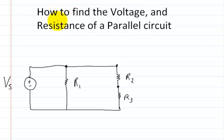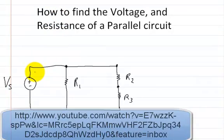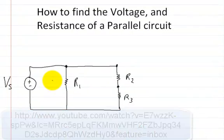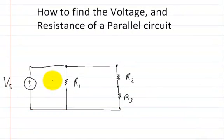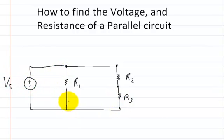How to find the voltage and resistance of a parallel circuit. I drew a circuit from another video called Current Divider Part 2. A property of parallel circuits is that when you have a voltage supply and branches that are in parallel with the supply, those branches have the same voltage as the power supply.